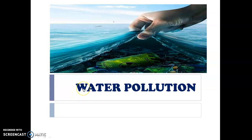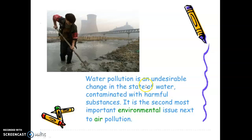Hi students. This is water pollution — important points to discuss. Water pollution is the undesirable change occurring in the state of water that is contaminated with harmful substances, including changes to its chemical properties. These undesirable changes define the case of water pollution.